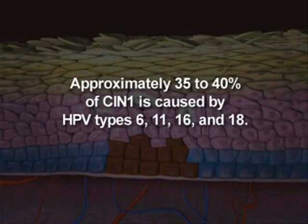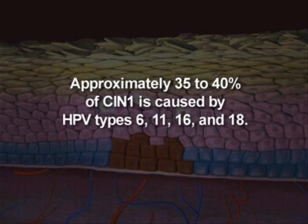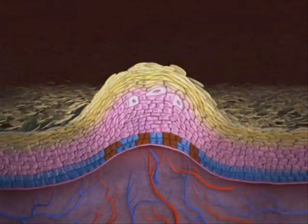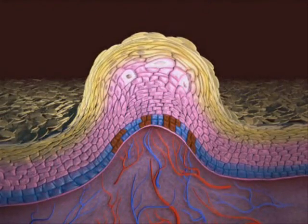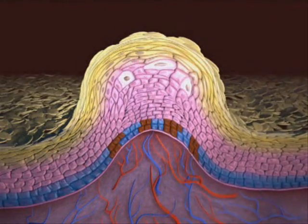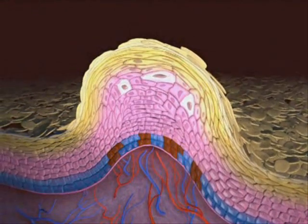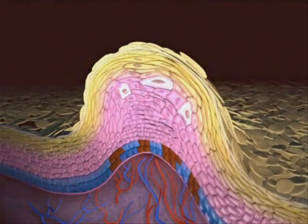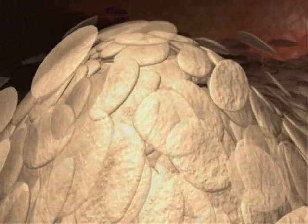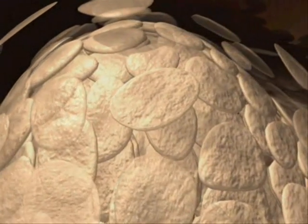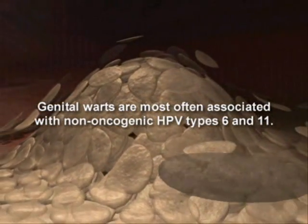Approximately 35 to 40 percent of CIN1 is caused by HPV types 6, 11, 16, and 18. Condylomas, or warts, are benign lesions that can occur when expression of HPV proteins increases the frequency of basal cell replication and disrupts normal maturation of the squamous epithelium. All layers above the basal cells proliferate, leading to hyperplasia and an upwelling of the basement membrane. The visible abnormal growths composed of a thickened epithelium are recognized as genital warts, and are most often associated with HPV types 6 and 11.